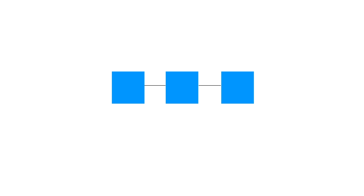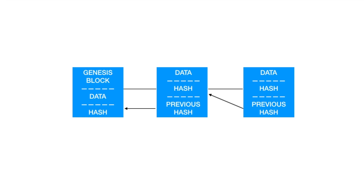A blockchain consists of different blocks which are connected to each other. The first block in a blockchain is called the Genesis block. It contains some data and a hash. The hash serves as an identifier for the block.